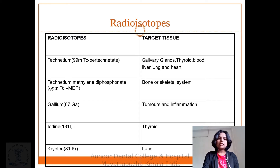Technetium methylene diphosphonate targets bone. Gallium targets tumors and inflammation. Other agents include iron-130, pyrophosphate, and krypton.